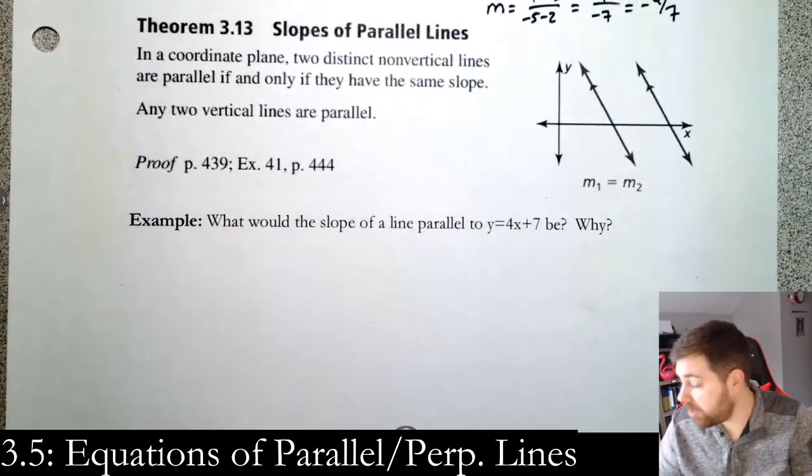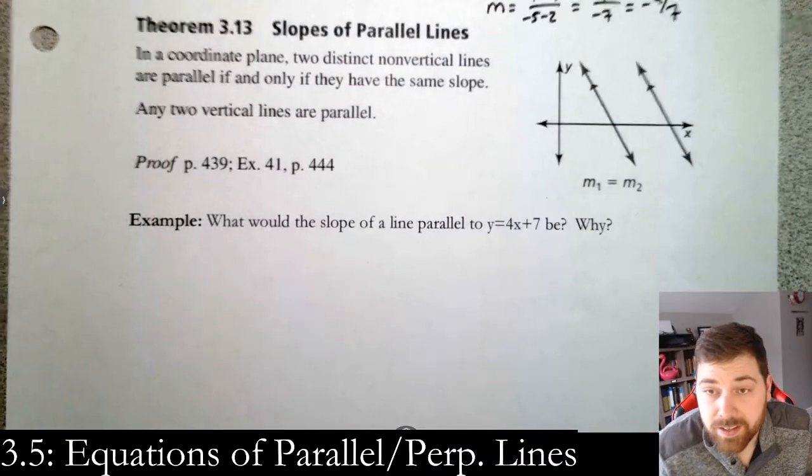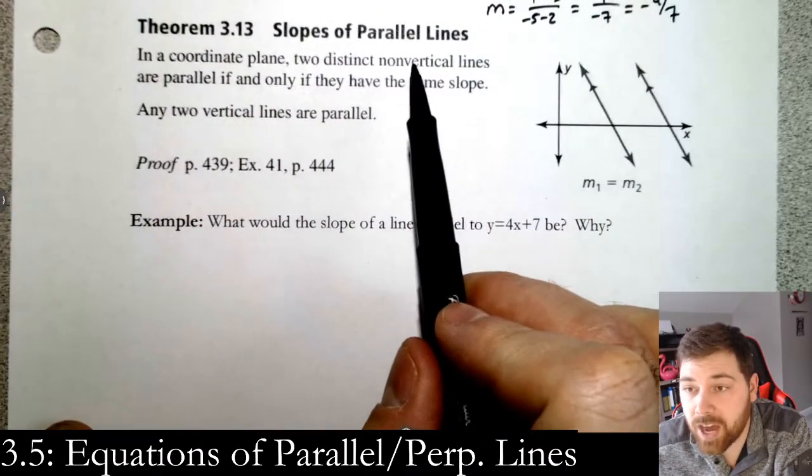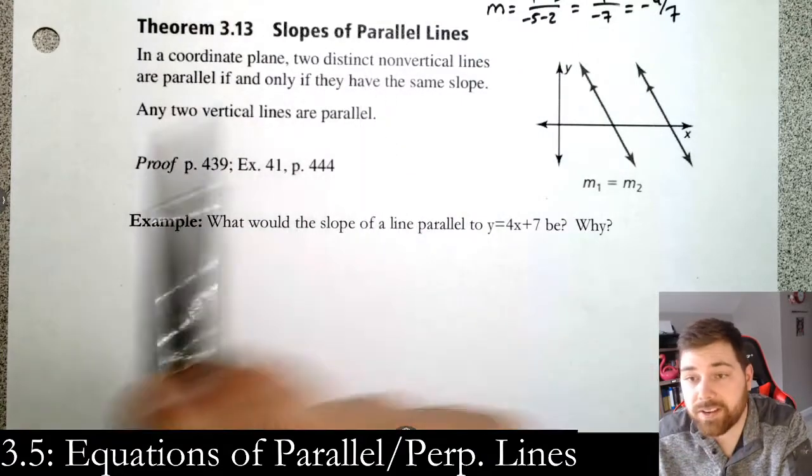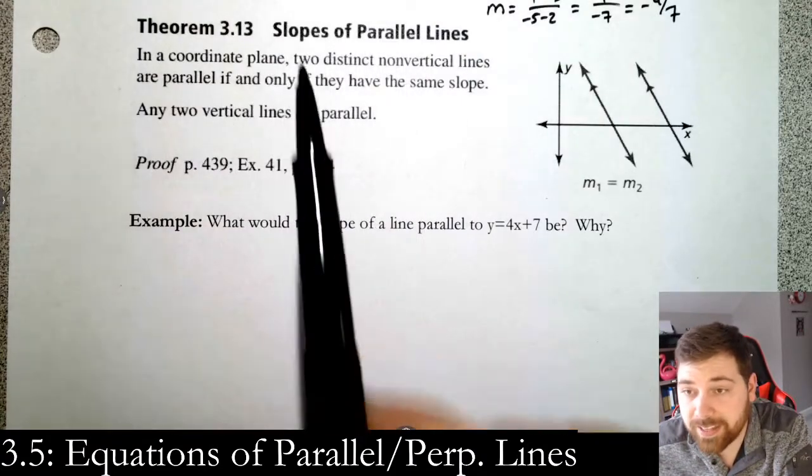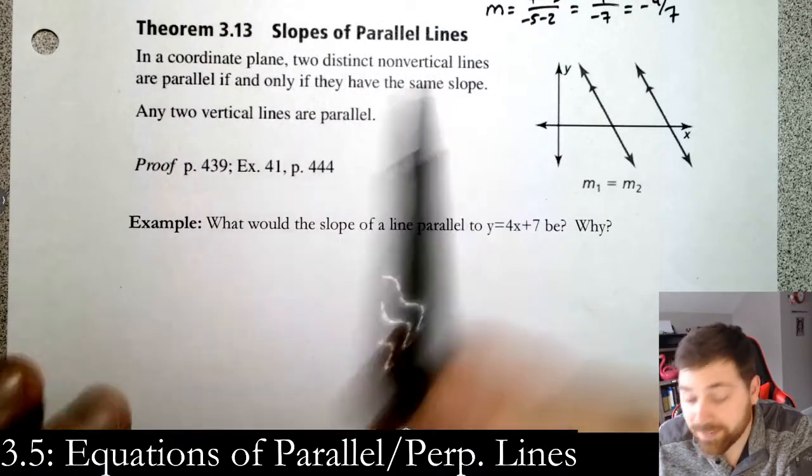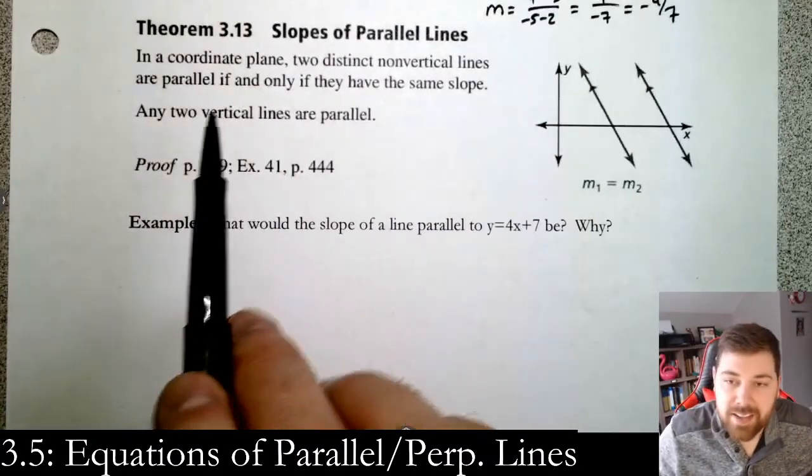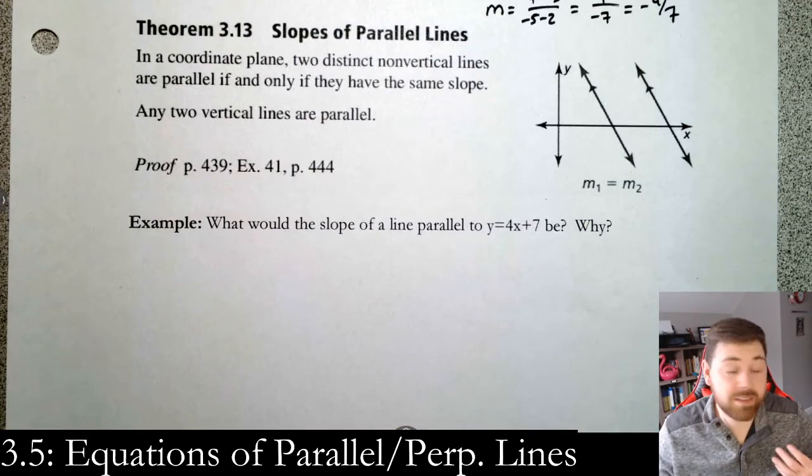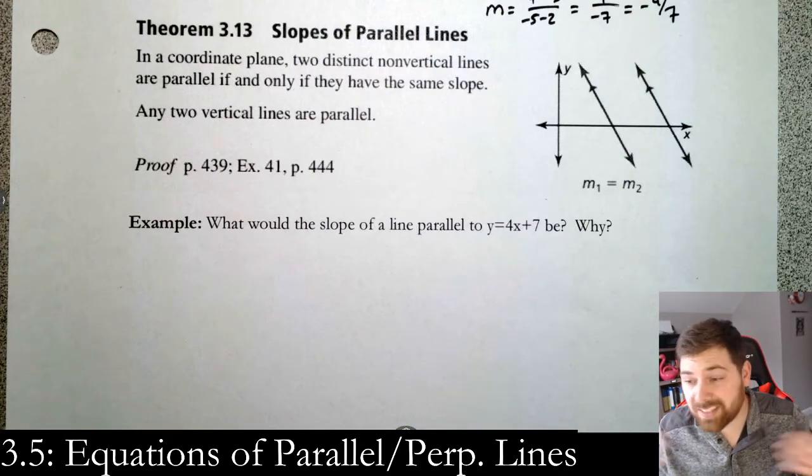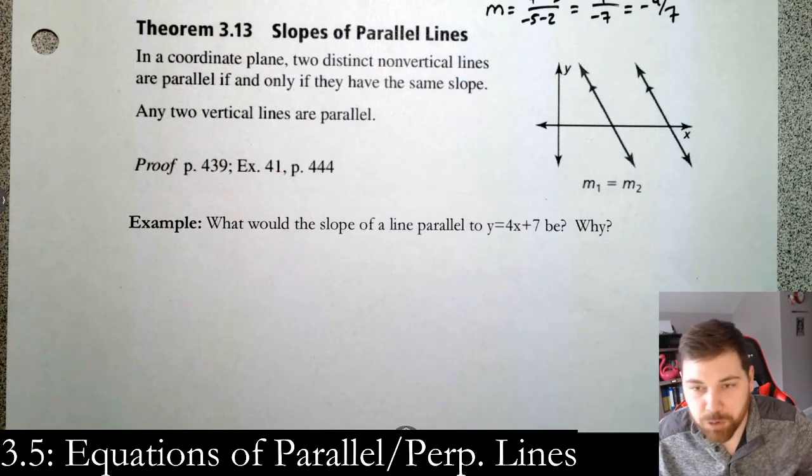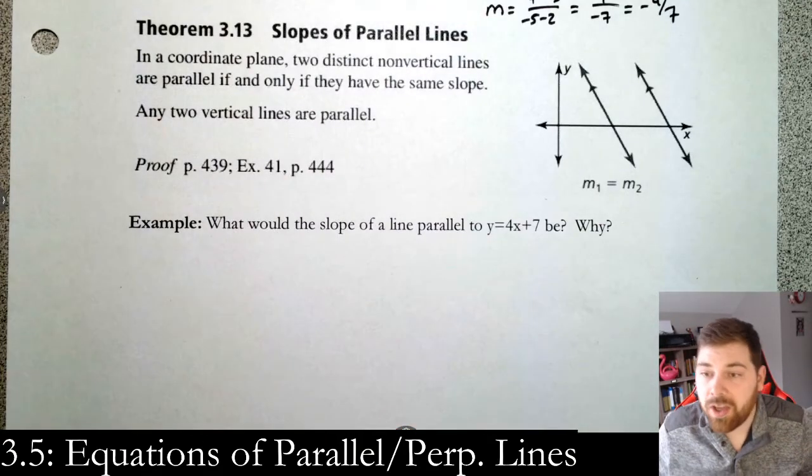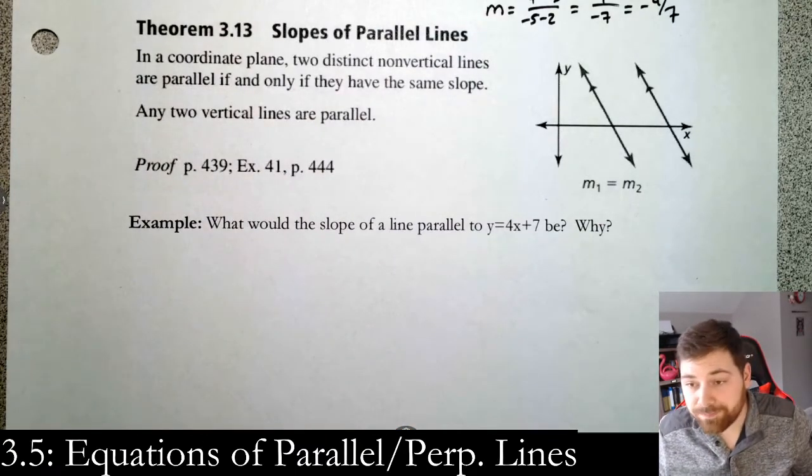The first theorem is the slope of parallel lines. If we have two distinct non-vertical lines—vertical lines have undefined slope—they are parallel if and only if they have the same slope. So parallel lines have the same slope. It adds any two vertical lines are parallel because vertical lines have undefined slope, so they can't have the same slope, but they kind of do—they're both undefined. If you want to see the proof, check it out on this page.